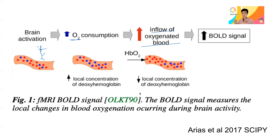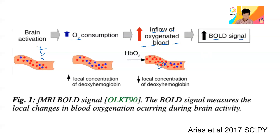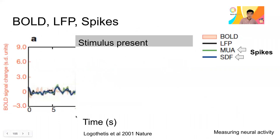The BOLD signal is measuring basically the difference between oxygen-rich blood versus deoxyhemoglobin versus oxyhemoglobin. That's the source of the BOLD signal. To understand what the BOLD signal means: it is highly related to blood, and the relation to neural activity is not straightforward.